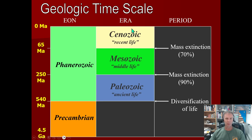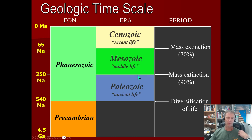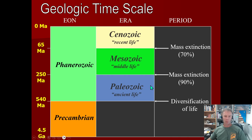Let's move on to the era level. We have three eras in the Phanerozoic: the Cenozoic, the Mesozoic, and the Paleozoic. The divisions between these three time periods are based on mass extinctions — the two biggest extinction events in Earth's history. Between the Cenozoic and the Mesozoic is the one that killed off, among other things, the dinosaurs — about 70% of species. And then we have an even bigger extinction event at the end of the Paleozoic — about 90% of all species going extinct. These are drawn largely from the fossil record.